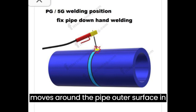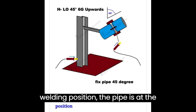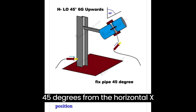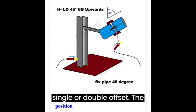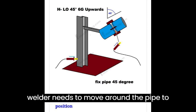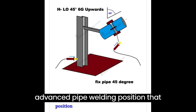In the 6G pipe welding position, the pipe is at a slope or incline — approximately 45 degrees from the horizontal X axis or from the vertical Y axis. The pipeline can be in a single or double offset. The pipe will be in a fixed position, so the welder needs to move around the pipe to perform the welding. This is an advanced pipe welding position that requires an experienced welder and expert consultation.